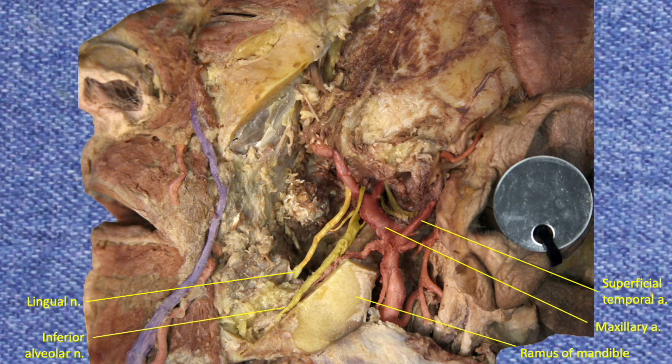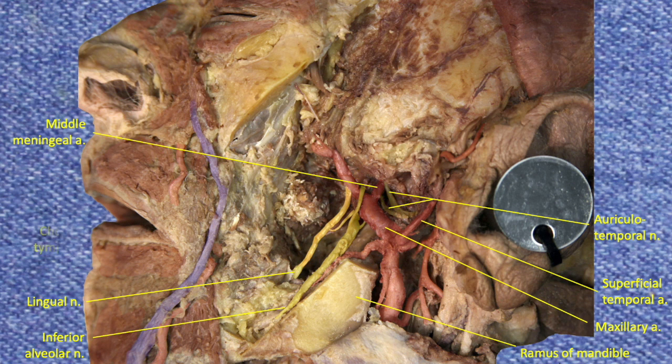If we zoom in on the dissection and change the angle of the camera, we can again see the previously labeled structures. The middle meningeal artery is present and so are the two roots of the auriculotemporal nerve. Now focus your attention on the lingual nerve — note a wispy nerve entering its posterior aspect. This is the chorda tympani, a branch of the facial nerve which provides taste sensation to the anterior two-thirds of the tongue.